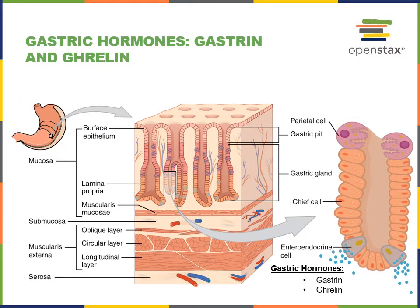As food enters the stomach, the chemoreceptors of the enteric nervous system detect nutrients released from the chemical digestion of protein. This stimulates the production of gastrin from the enteroendocrine G cells of the gastric pits. Gastrin then stimulates the production of gastric juice as an intrinsic control mechanism in the gastric phase of gastric secretions.